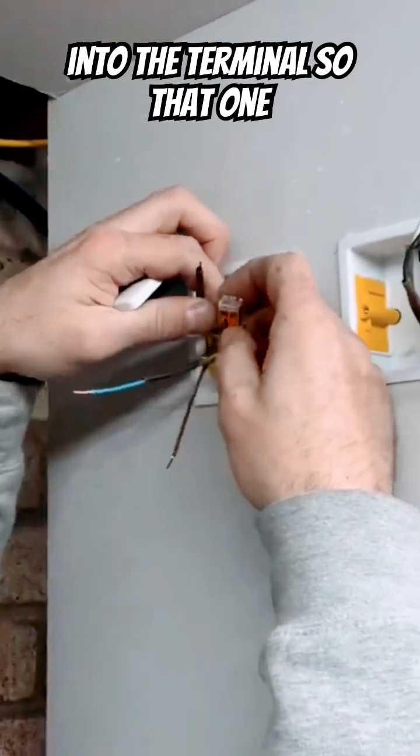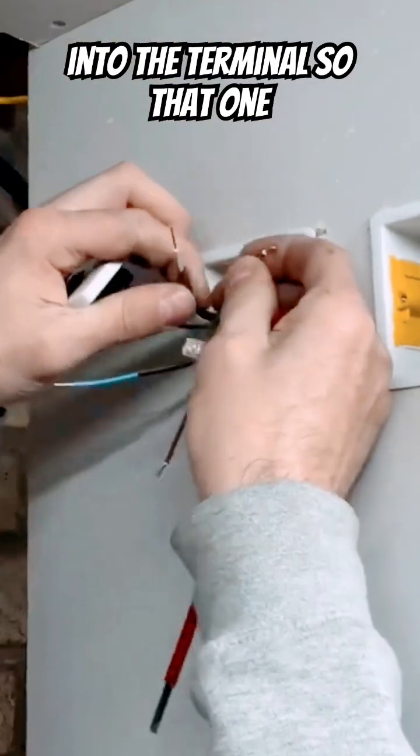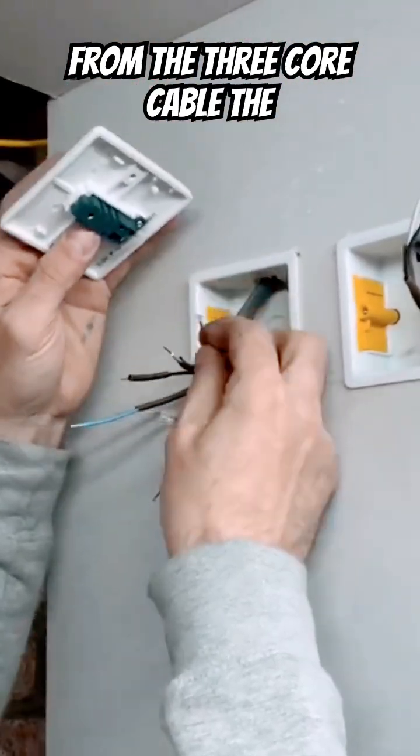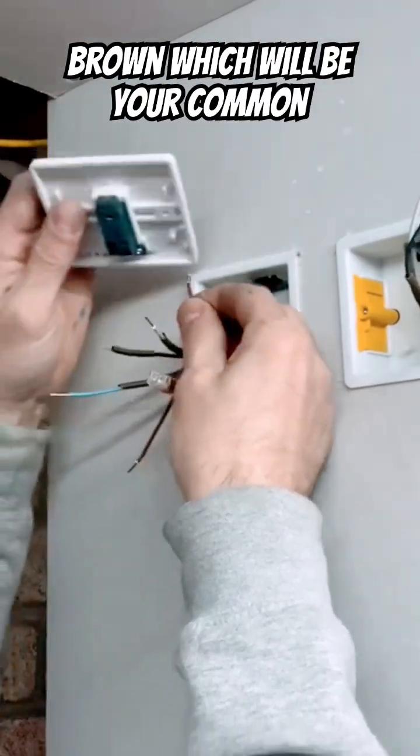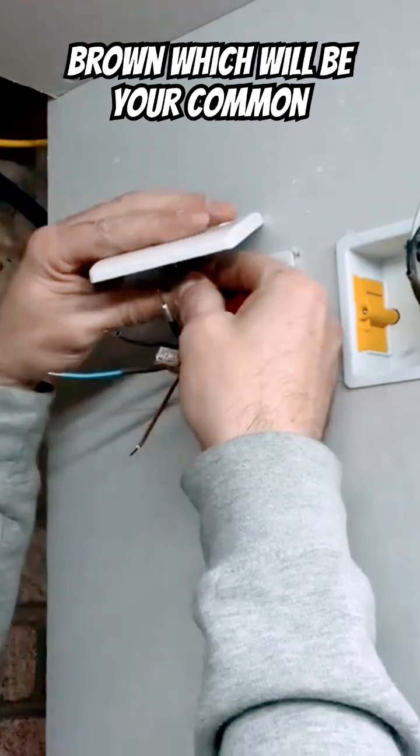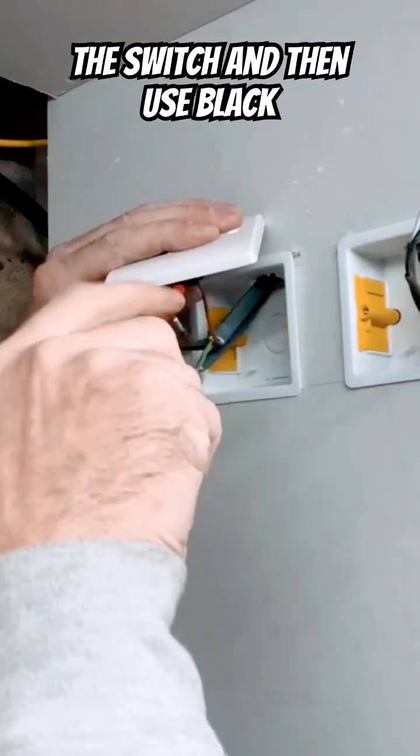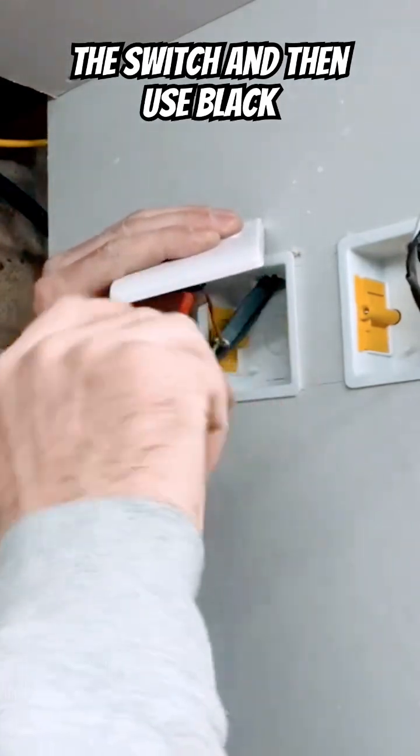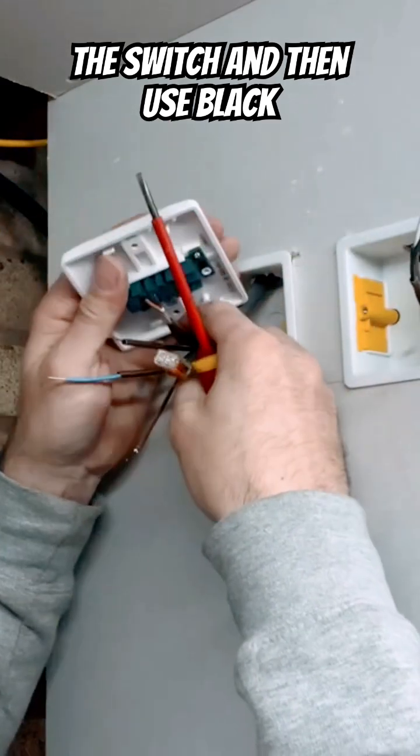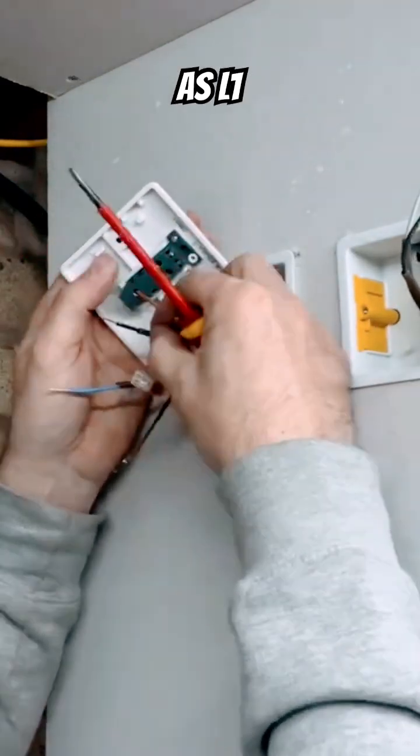So that one from the three core cable, the brown which will be your common, goes straight into the common of the switch. And then use black as L1.